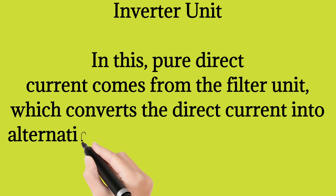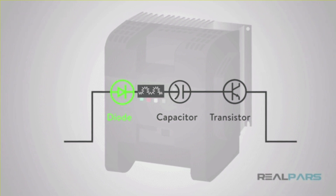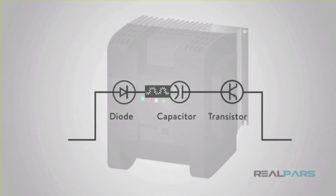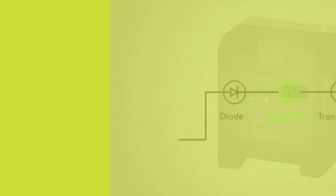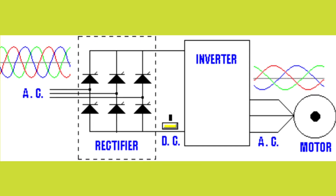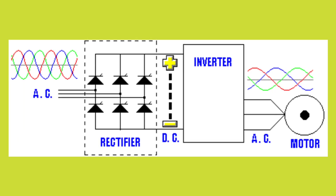How VFD or AC drive works: according to the VFD or AC drive working principle, it is an electronic controller specially designed to change the frequency of voltage supplied to the induction motor. A VFD controls the speed of an AC motor by varying the frequency supplied to the motor. The first step is to convert the AC supply voltage to DC using a rectifier. DC power has voltage ripple which is eliminated by using a filter capacitor, then the DC voltage is converted into AC voltage with the help of an inverter, which is our output.